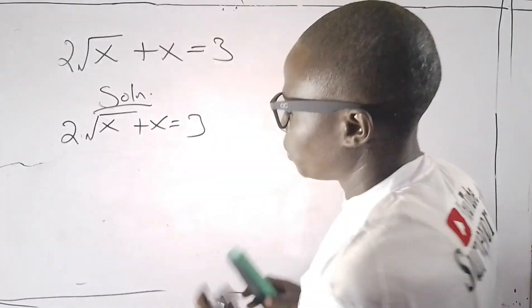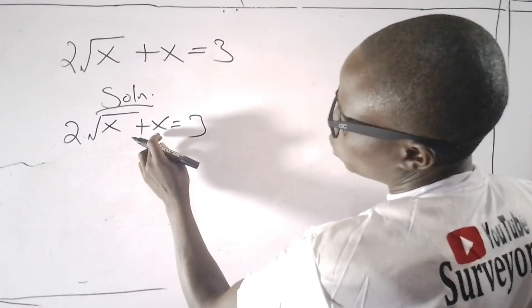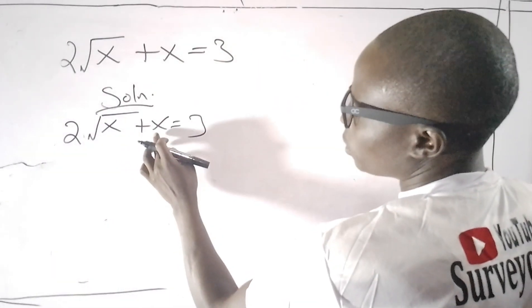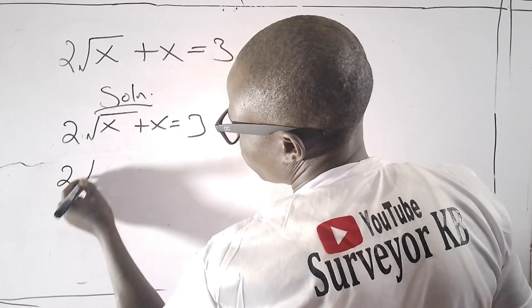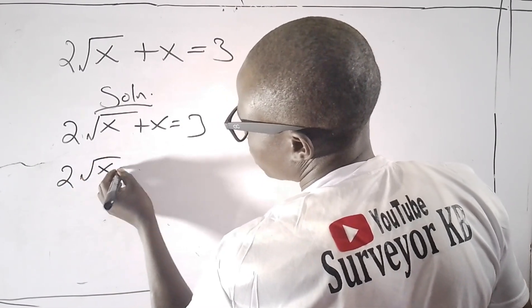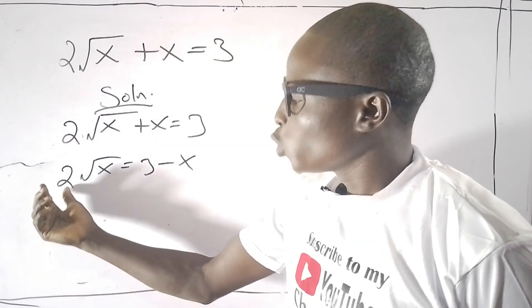I would like to send this positive x to the right side, so that I have 2√x equals 3 minus x.